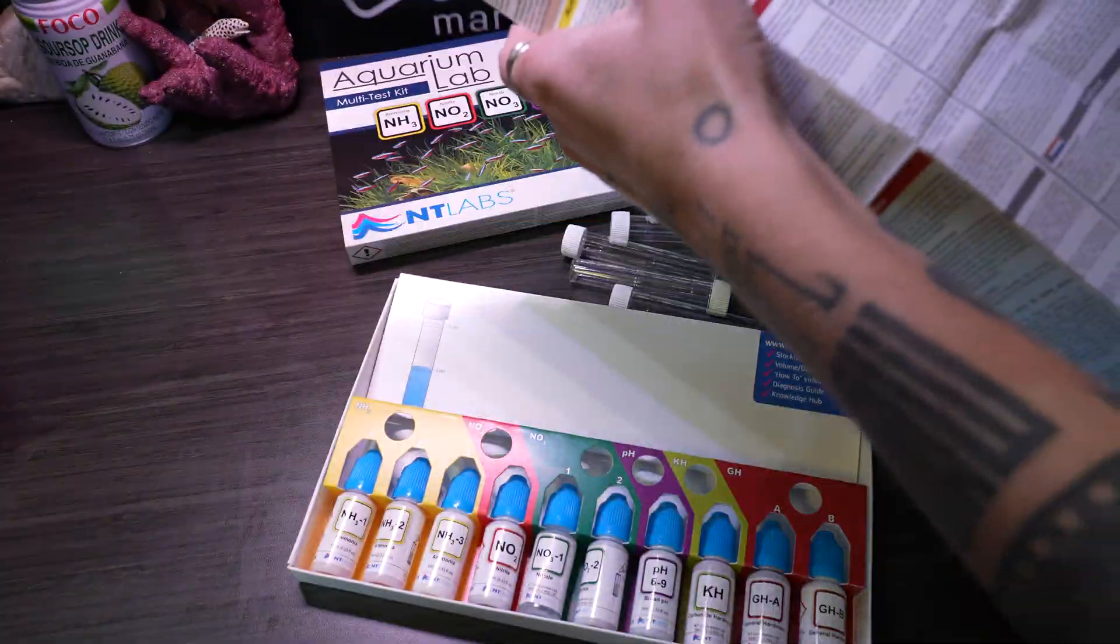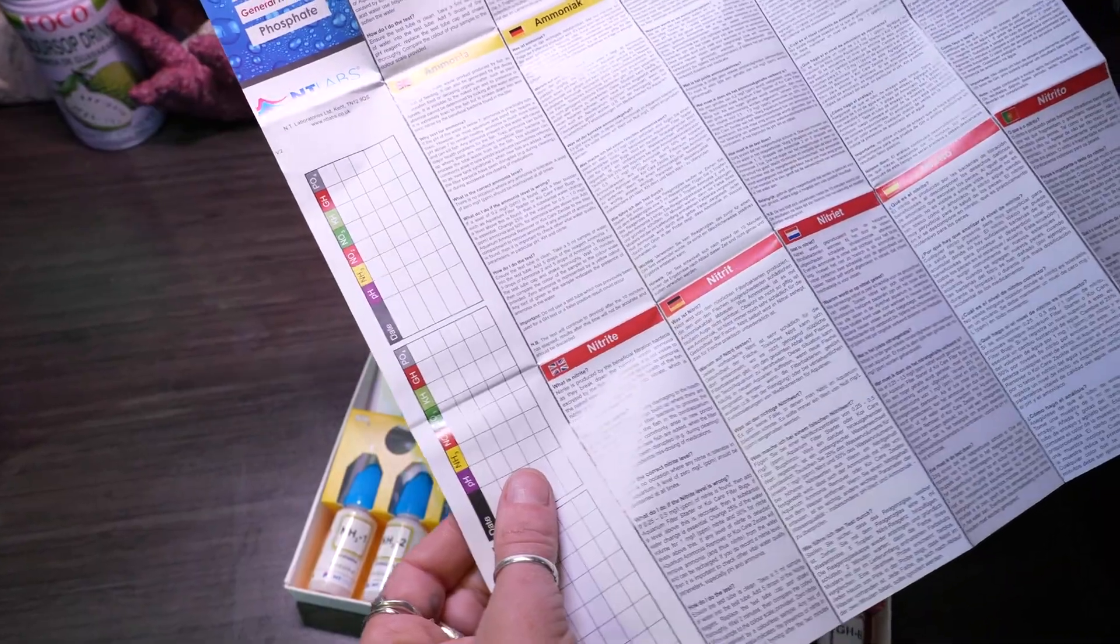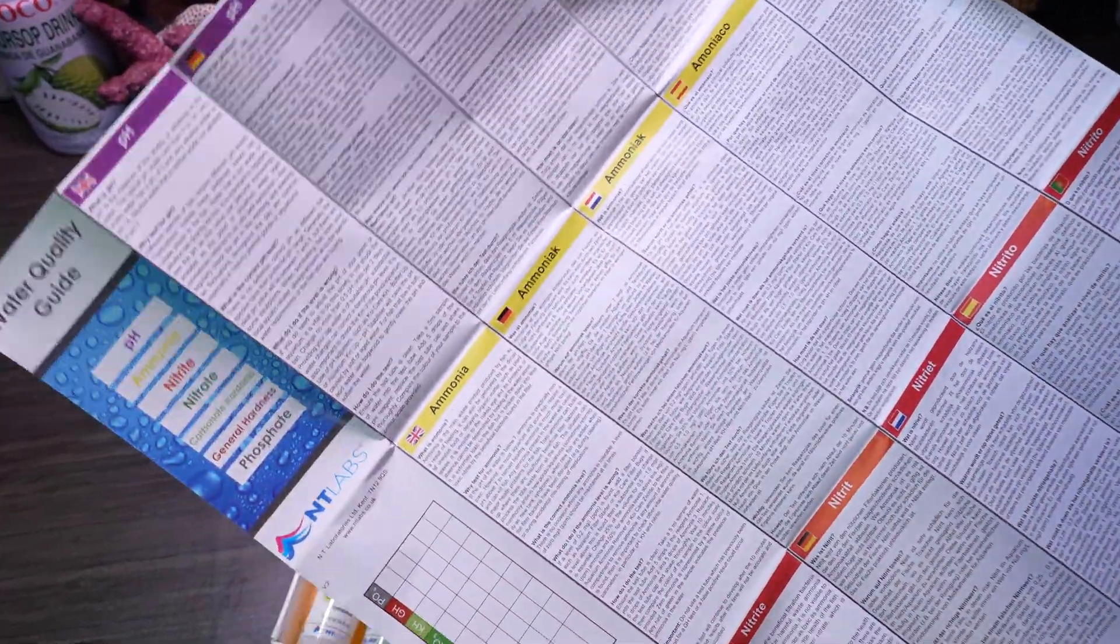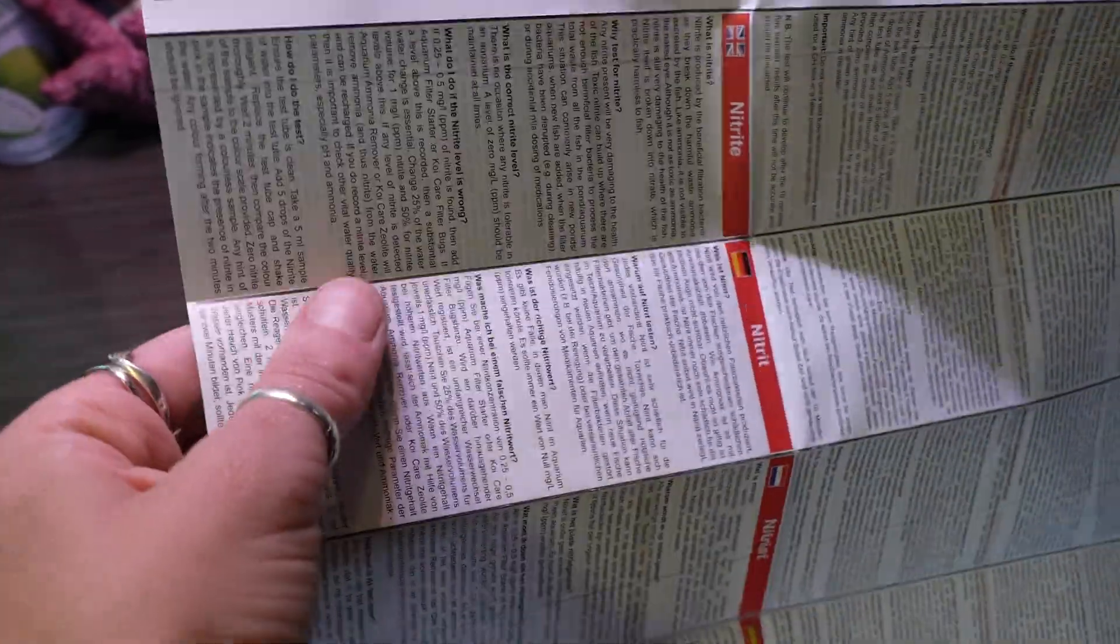This kit includes tests for six critical parameters: ammonia, nitrite, nitrate, pH, general hardness or GH, and carbonate hardness or KH.